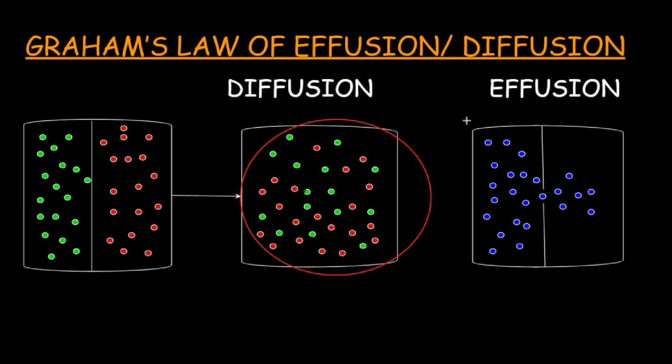Now let's discuss what is effusion. It is similar to diffusion, but the only difference is it is the escape of molecules from a narrow opening, moving from higher concentration to lower concentration. The right side of the container has a vacuum and the left side has molecules represented by blue dots. When these rapidly and randomly moving molecules come in contact with the hole, they escape through it toward the area of lower concentration. This phenomenon, resulting from a concentration difference but occurring through a narrow opening, is called effusion.